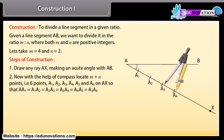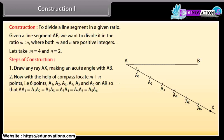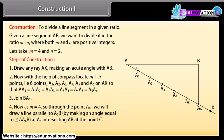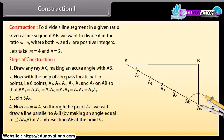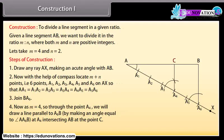A2, A3, A4, A5, and A6 on AX so that AA1 = A1A2 = A2A3 = A3A4 = A4A5 = A5A6. Join B and A6. Through the point A4, draw a line parallel to A6B by making an angle equal to angle AA6B at A4, intersecting AB at the point C. Then AC to CB is equal to 4 is to 2.